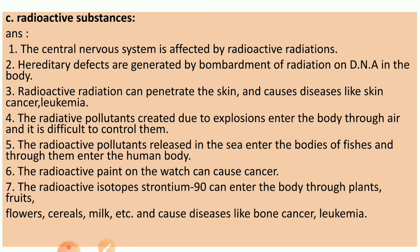Radioactive substances: the central nervous system is affected by radioactive radiations. Hereditary defects are generated by the bombardment of radiation on DNA in the body. Radioactive radiations can penetrate the skin and cause diseases like skin cancer or leukemia. Radioactive pollutants created due to explosions enter the body through air and are difficult to control. Radioactive pollutants released in the sea enter the bodies of fishes and through them enter the human body. The radioactive paint on a watch can cause cancer. Radioactive isotopes can enter the body through plants, fruits, flowers, cereals and milk, and cause diseases like bone cancer and leukemia.